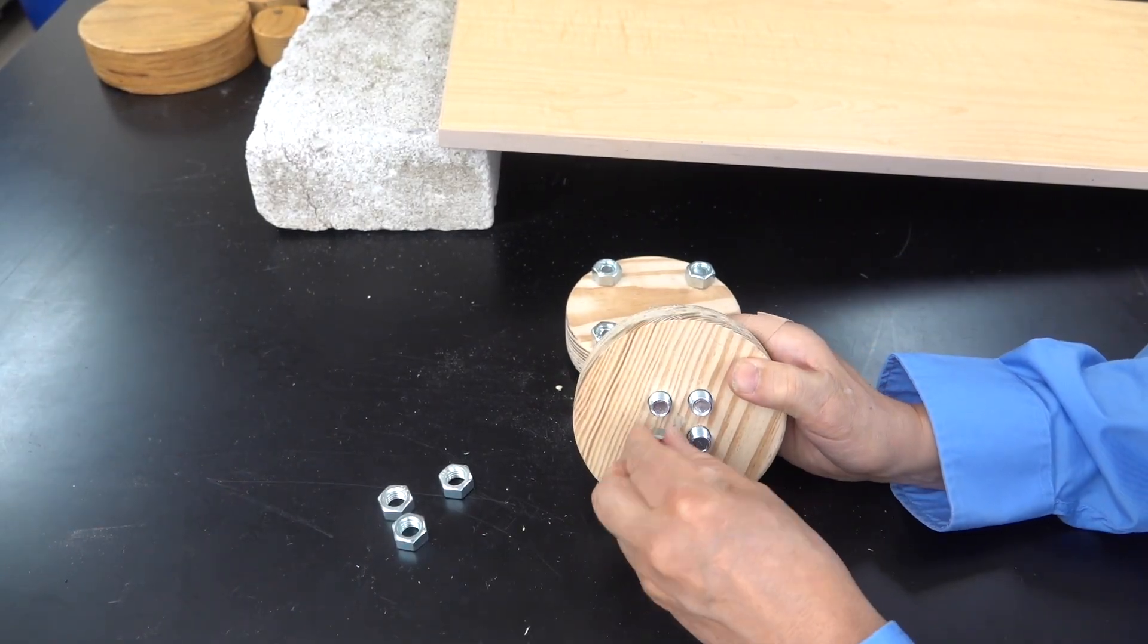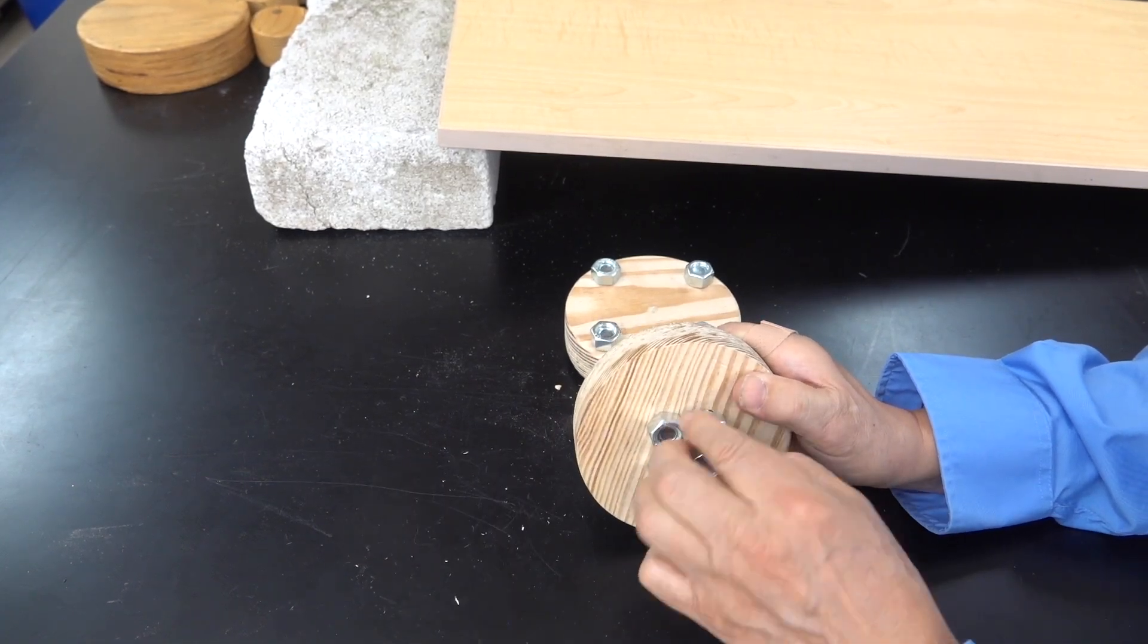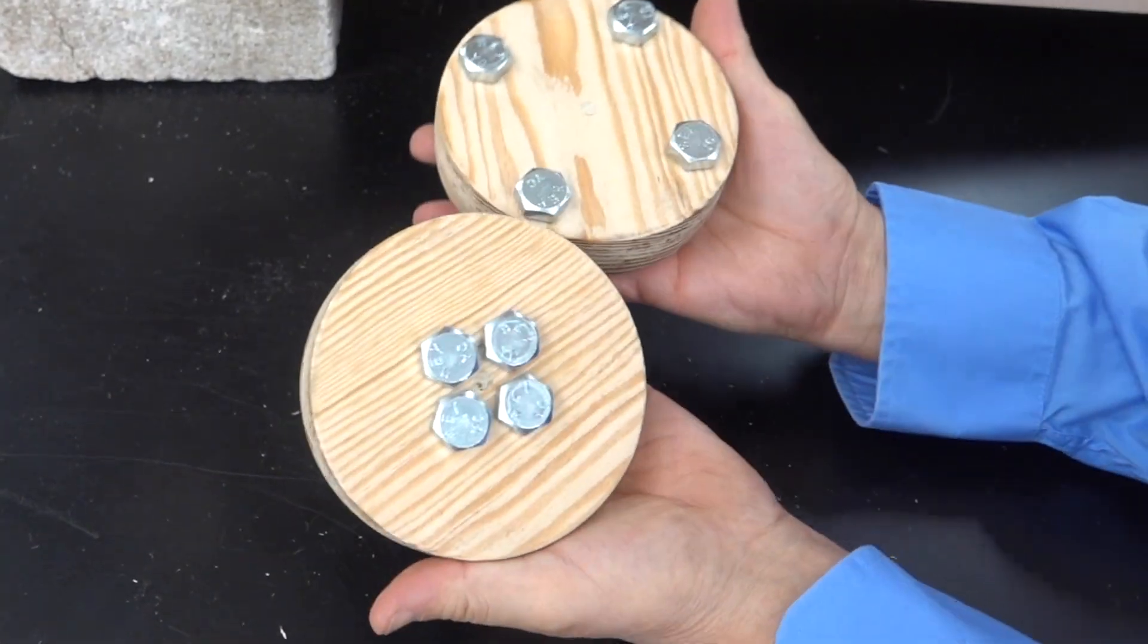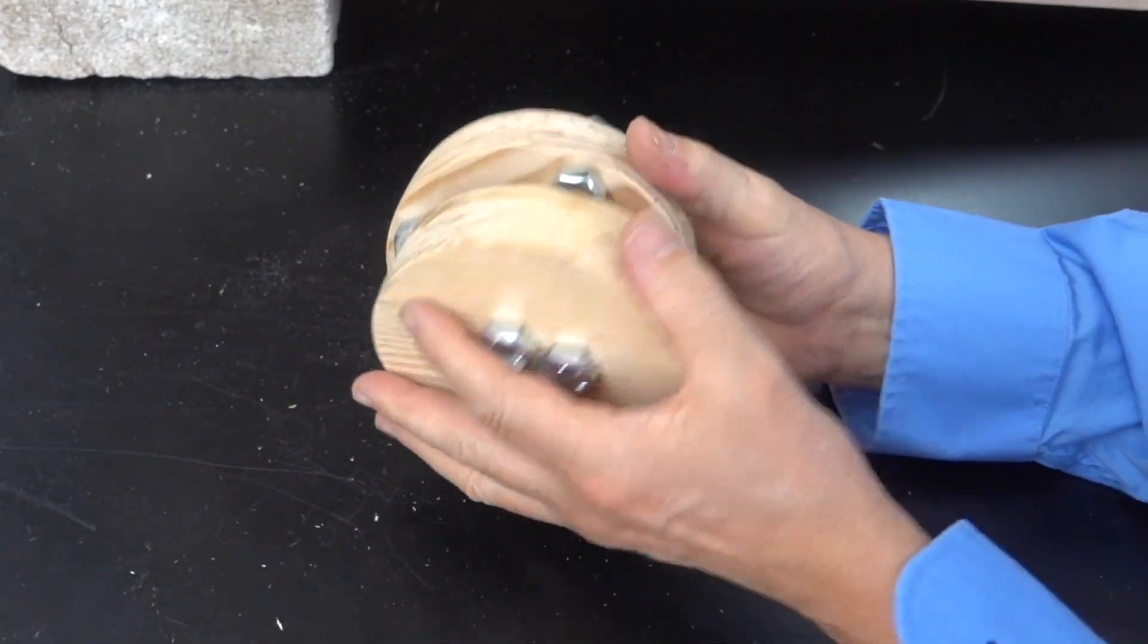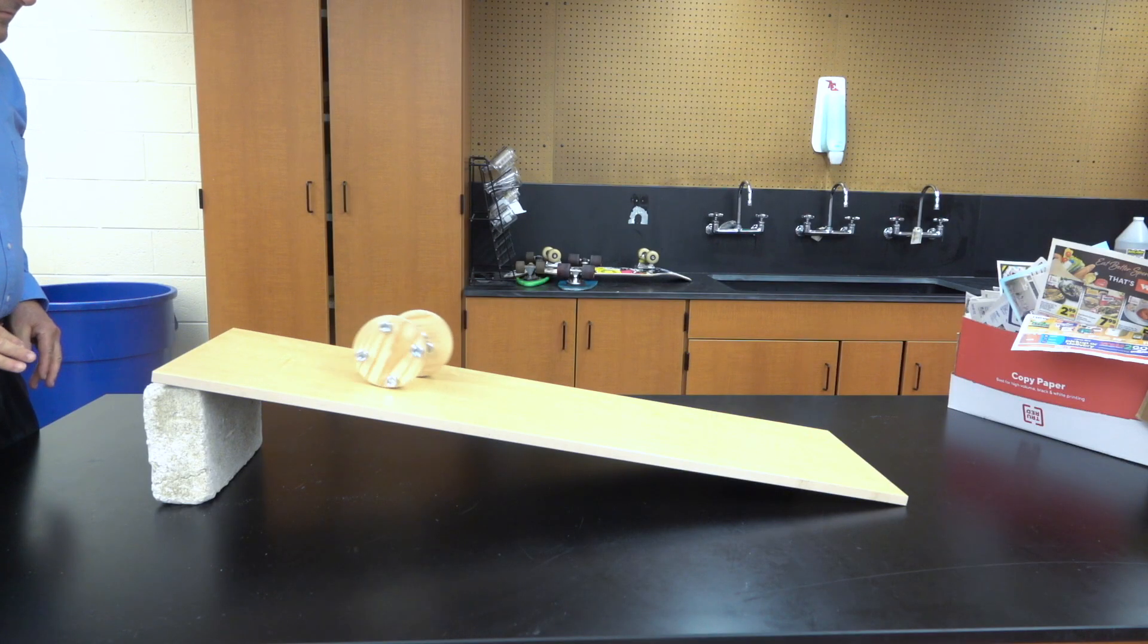Our next step would be to add four nuts and bolts to each one of the cylinders. Of course, they're the same size, so the cylinders continue to have the same amount of mass, it's just located at different positions on the cylinders. Now, when we roll them down the table, we find that the center weighted cylinder accelerates faster.